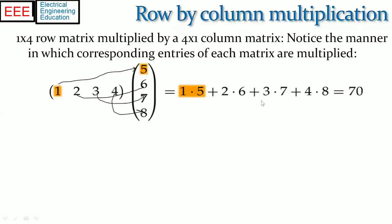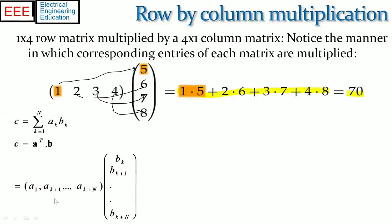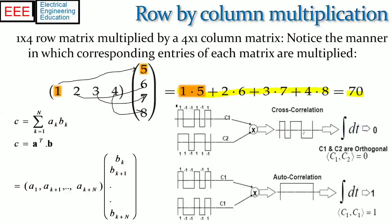An important application is to use the dot product as a filtering operation or a correlation operation. In filtering, one vector corresponds to the input and the second vector has entries of the filter weights; the output is the dot product of both sequences. Similarly, in the case of code division multiple access or CDMA, one vector is the received sequence and the second vector is the chip sequence. If both sequences are orthogonal, the dot product will be zero or very small. The correlation will be maximum if the two sequences are similar, meaning the data belongs to the intended user who has the sequence.